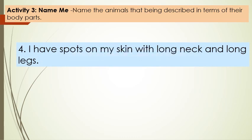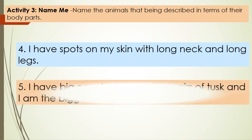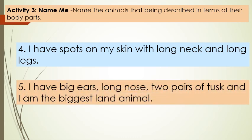Number 4: I have spots on my skin with a long neck and long legs. Name the animal. Number 5: I have big ears, a long nose, two pairs of tusks, and I am the biggest land animal. Name the animal.